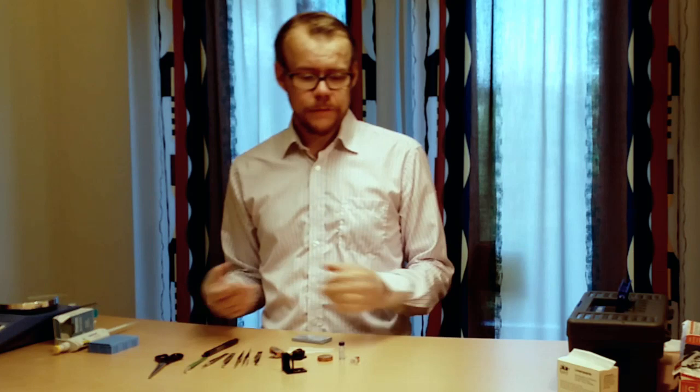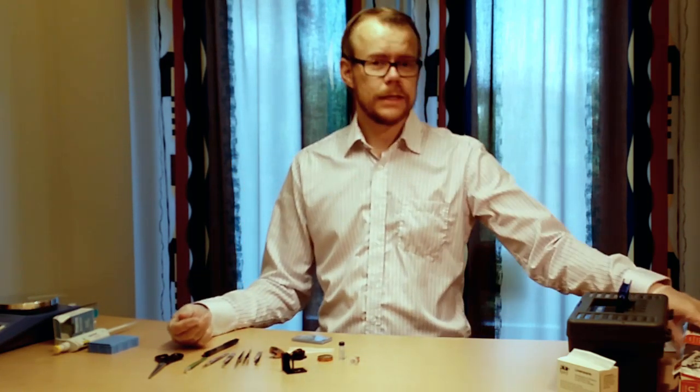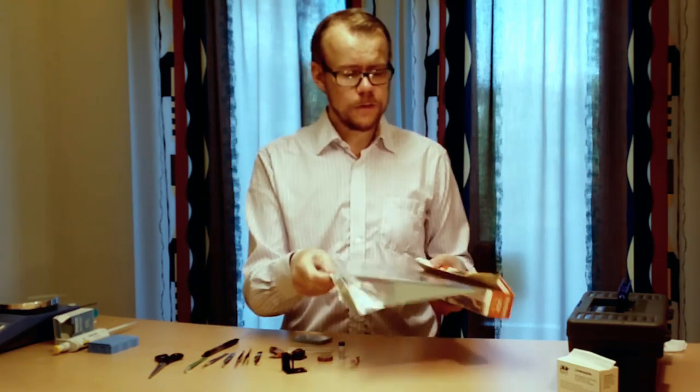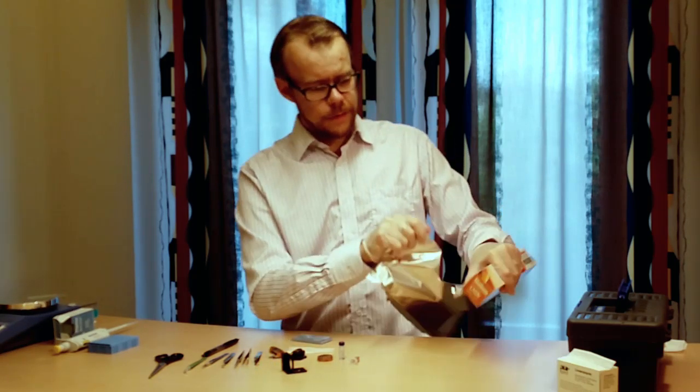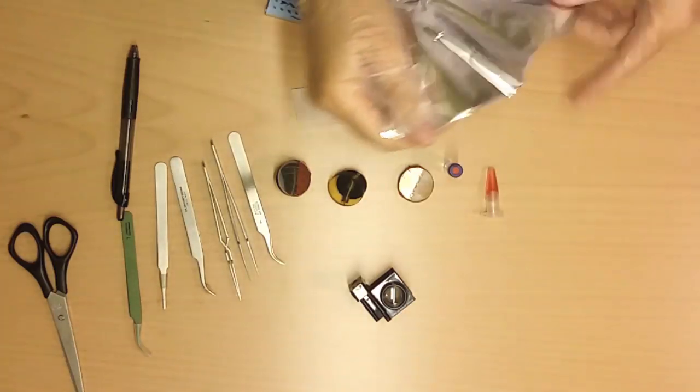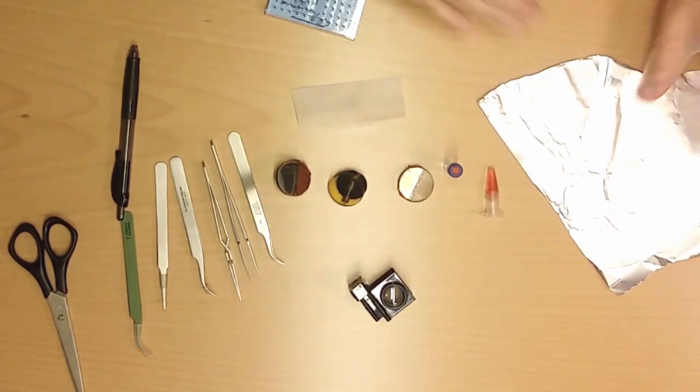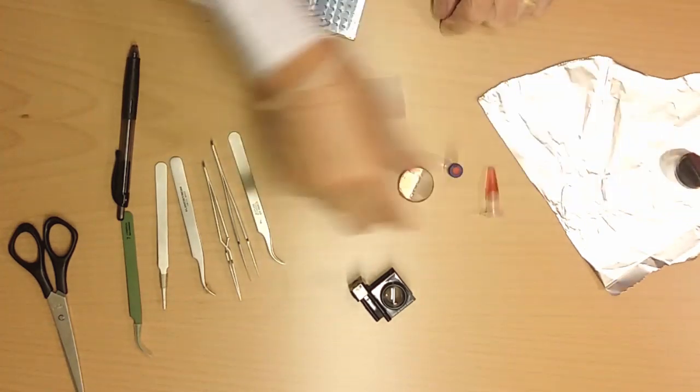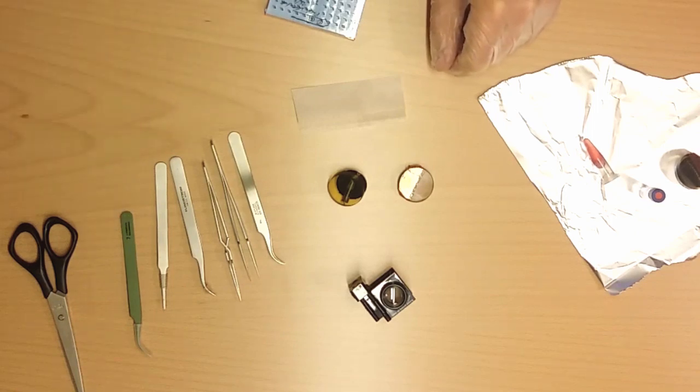When you do work with your samples it is very nice to have a very clean space. And one way to make a clean space is to use just standard aluminum foil like this. This you can buy at a grocery store. If you put these on top of your bench, then you have a very nice surface to work on here. Here you can have your samples when you do your sample preparations.